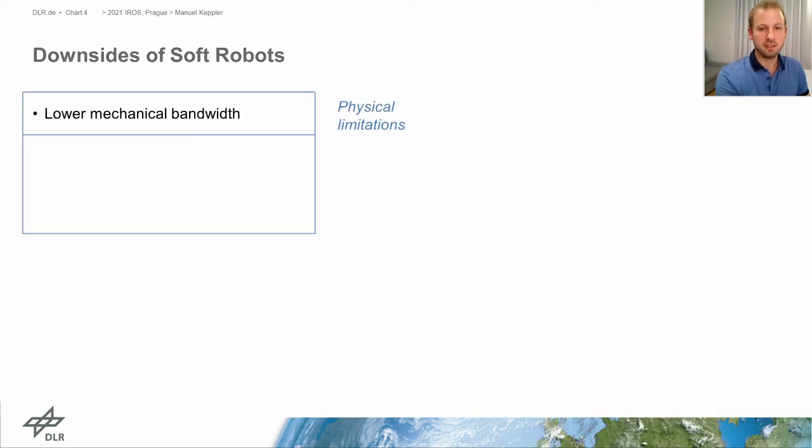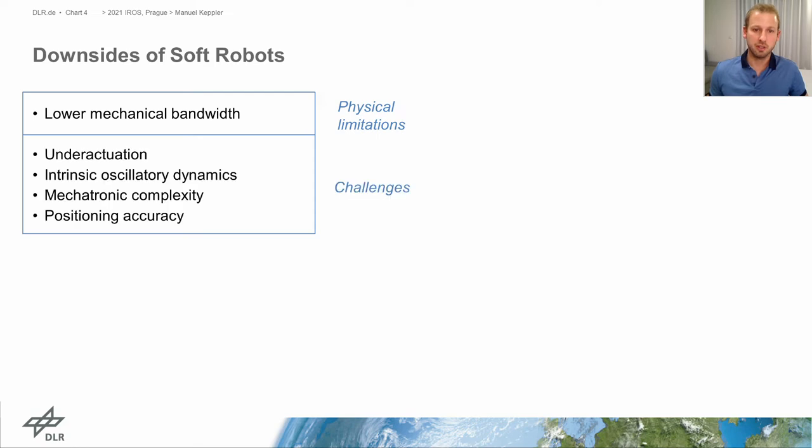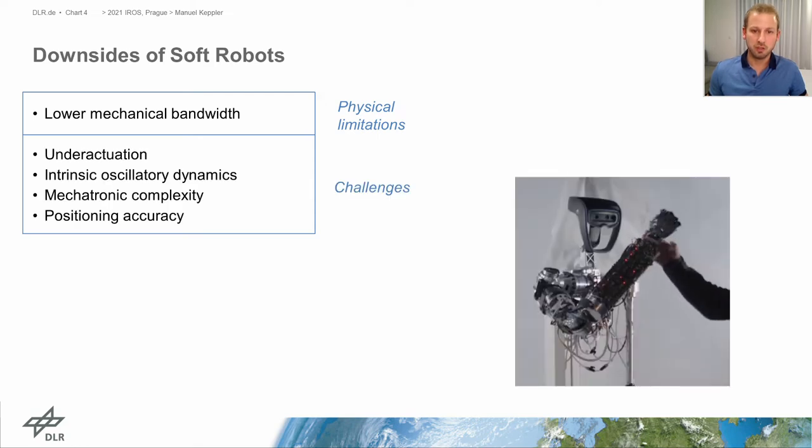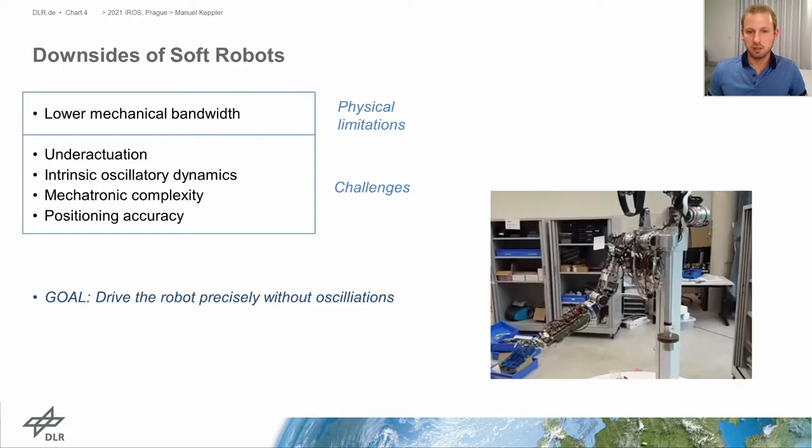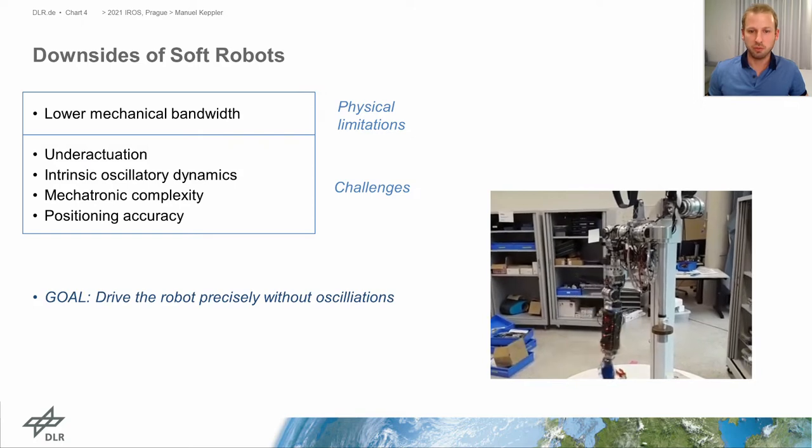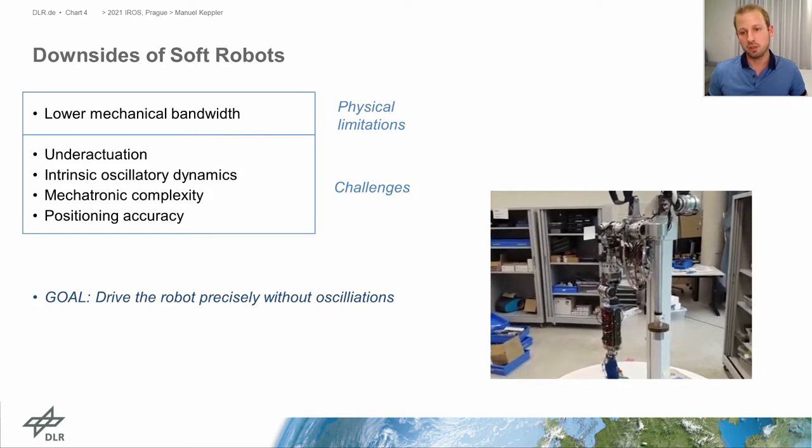But these advantages come at a price, as we have to deal with a reduced mechanical bandwidth compared to rigid robots. Further, from the control point of view, we have to deal with challenges such as under-actuation, unwanted intrinsic oscillatory dynamics, high mechatronic complexity, and achieving accurate end-effector positioning is tough. Clearly, the goal is to drive such robots precisely without unwanted oscillations.